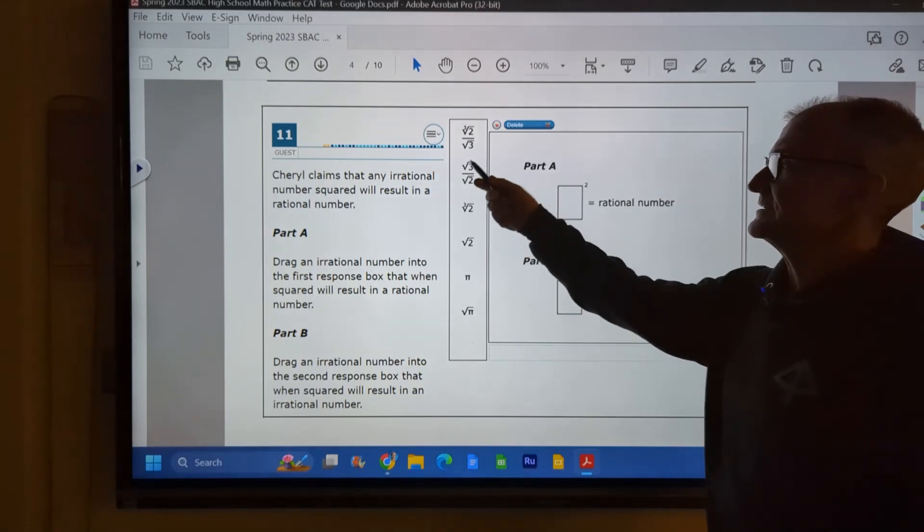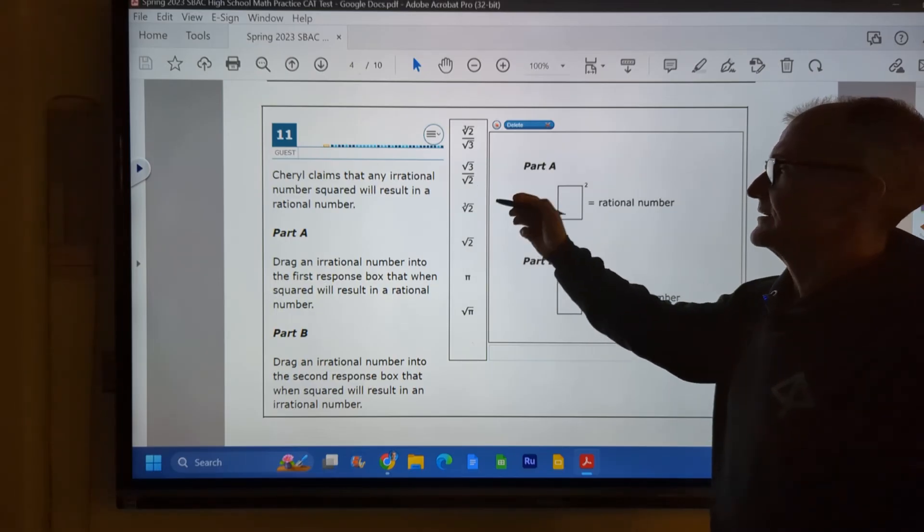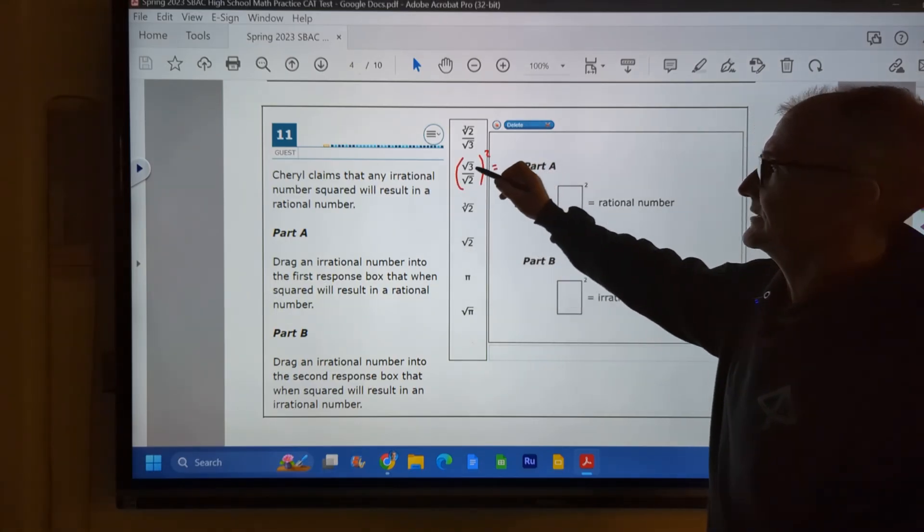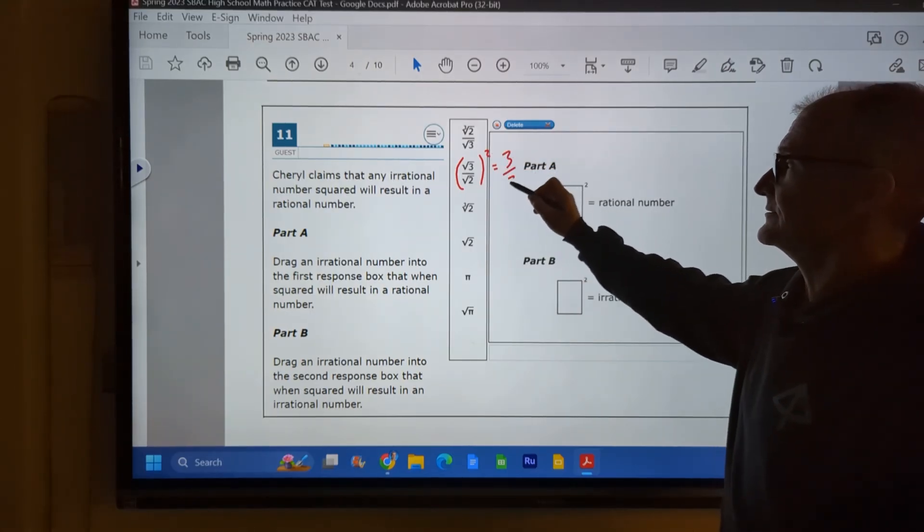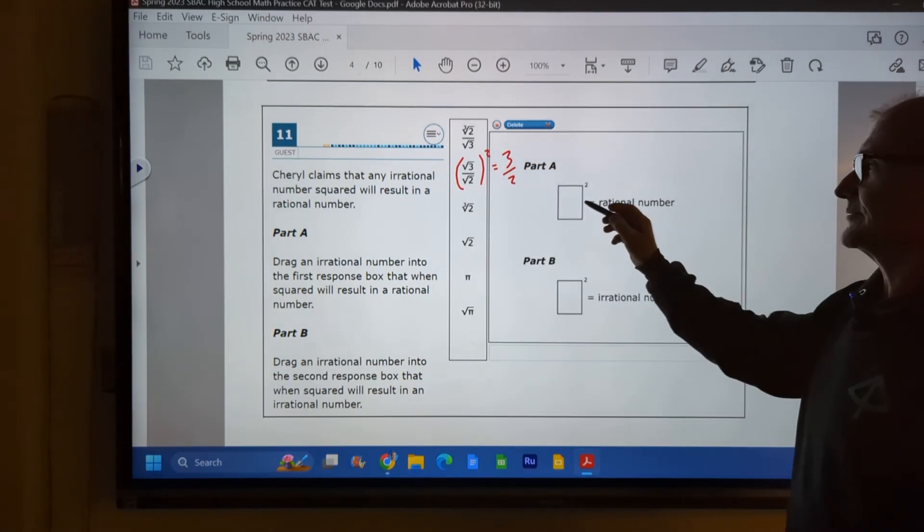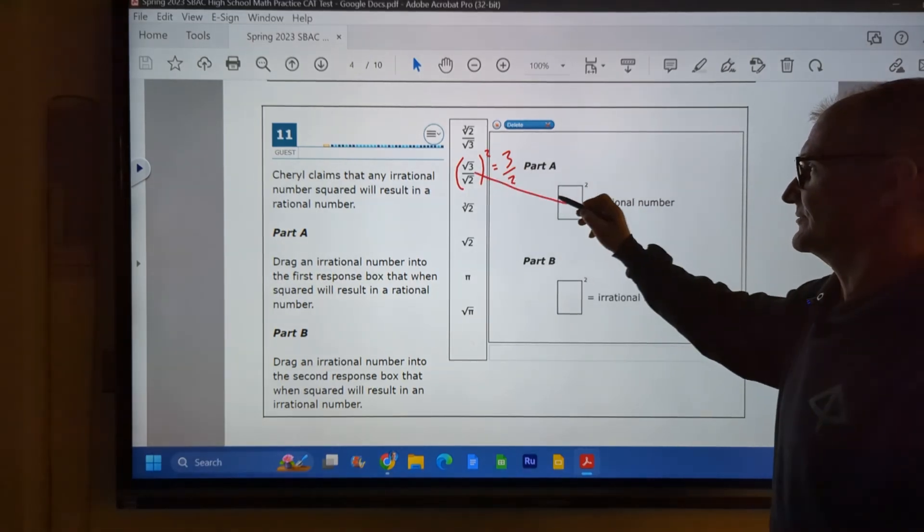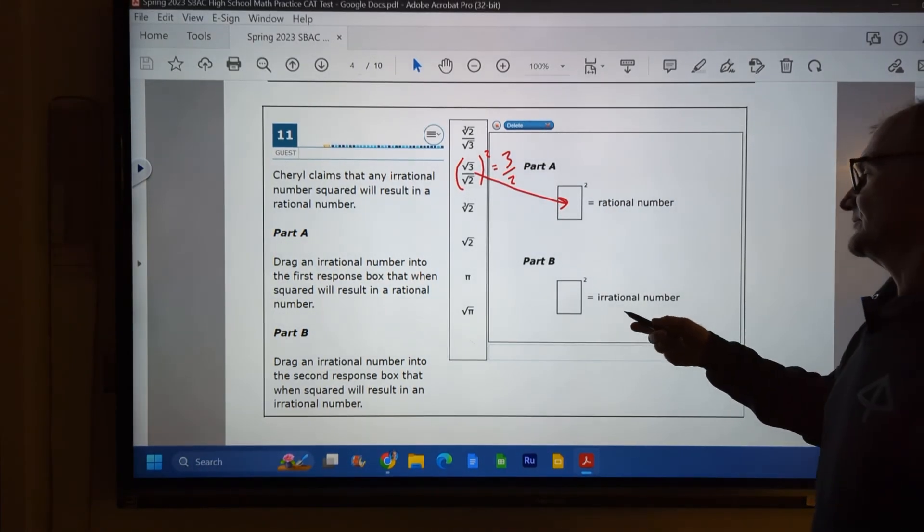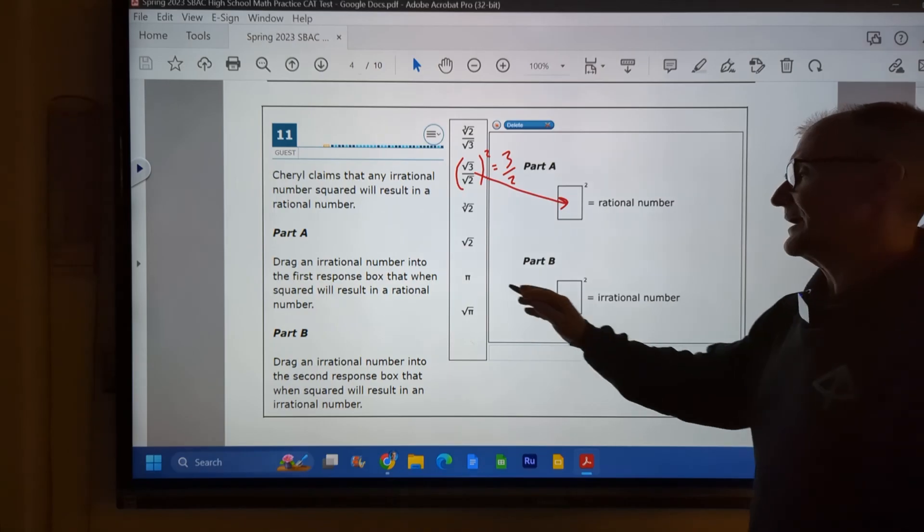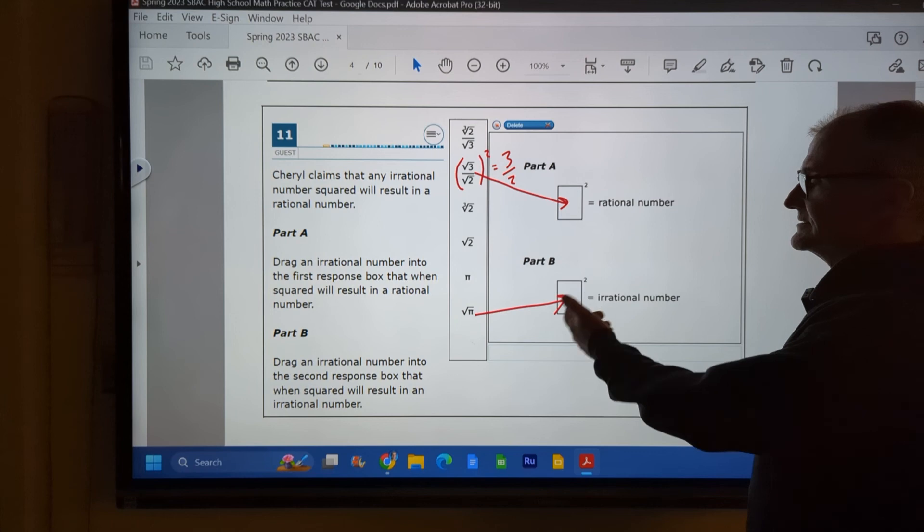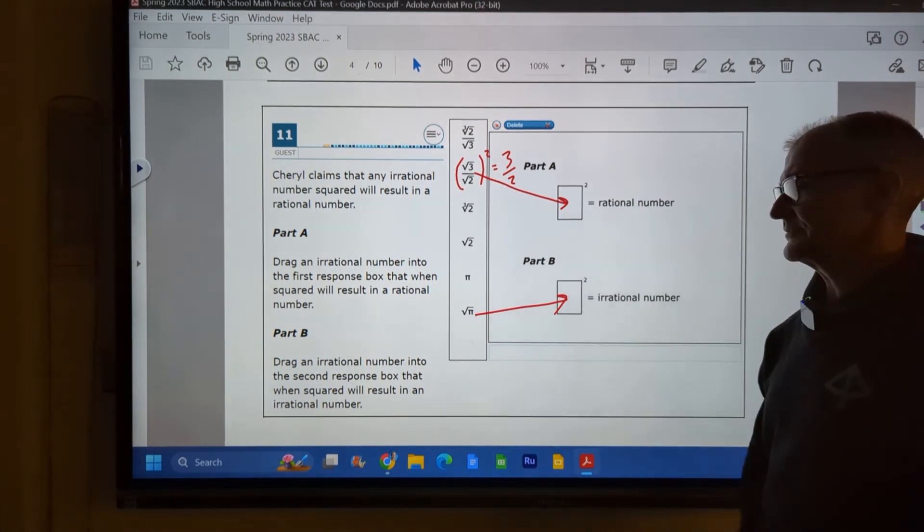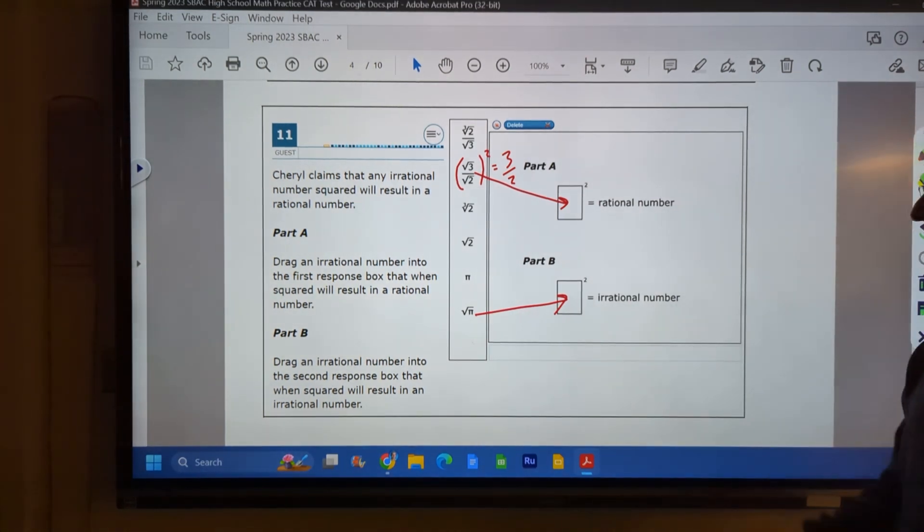If I were to take this value right here and square it, all right, so if I take this whole thing and square it, it would be square root of three squared is three. Square root of two squared is two. That is a rational number, so that would be the answer here. I drag this one over here. What squared would stay irrational? Well, pi or square root of pi. Pi is irrational, so you could just drag that one over there, and that would stay irrational.